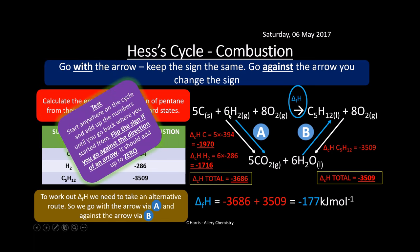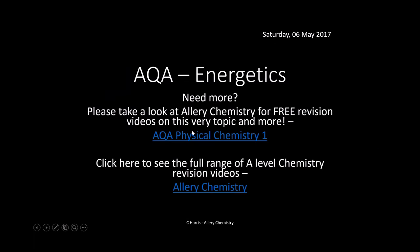Again, check it: put all your numbers in, go around the cycle — going with the arrow keep the sign the same, against the arrow change the sign — and it should add up to zero. So that's it, that's energetics. Make sure you can draw your Hess's cycle and work them out — plenty of marks up for grabs. You can get hold of these PowerPoints by clicking the link in the description box. Really great for revision. See you later, bye-bye.